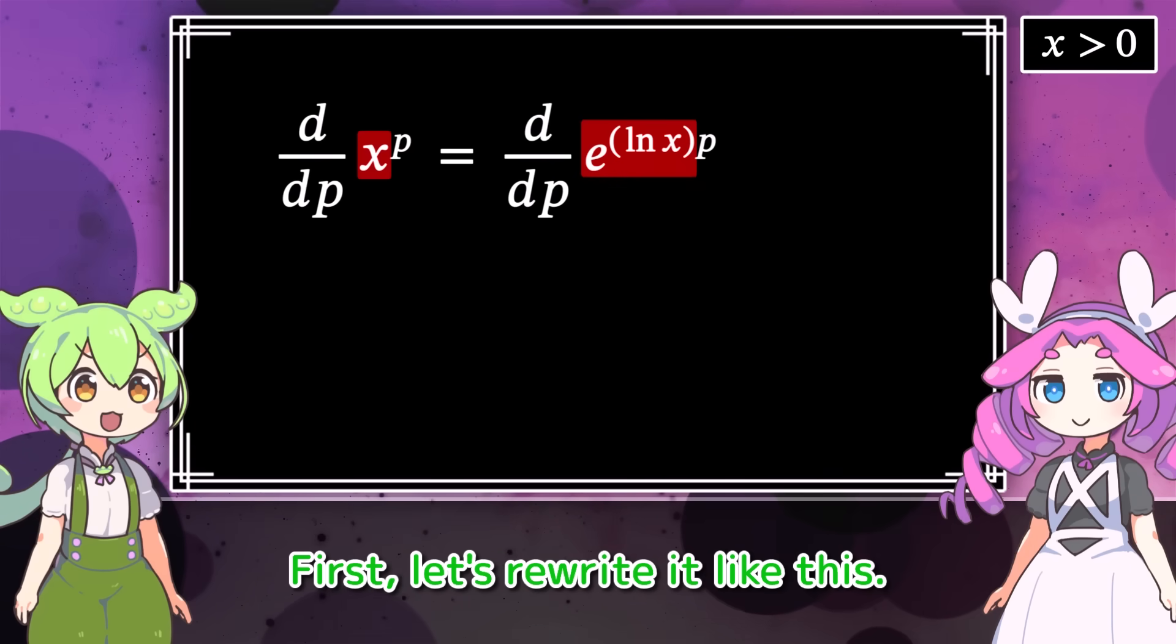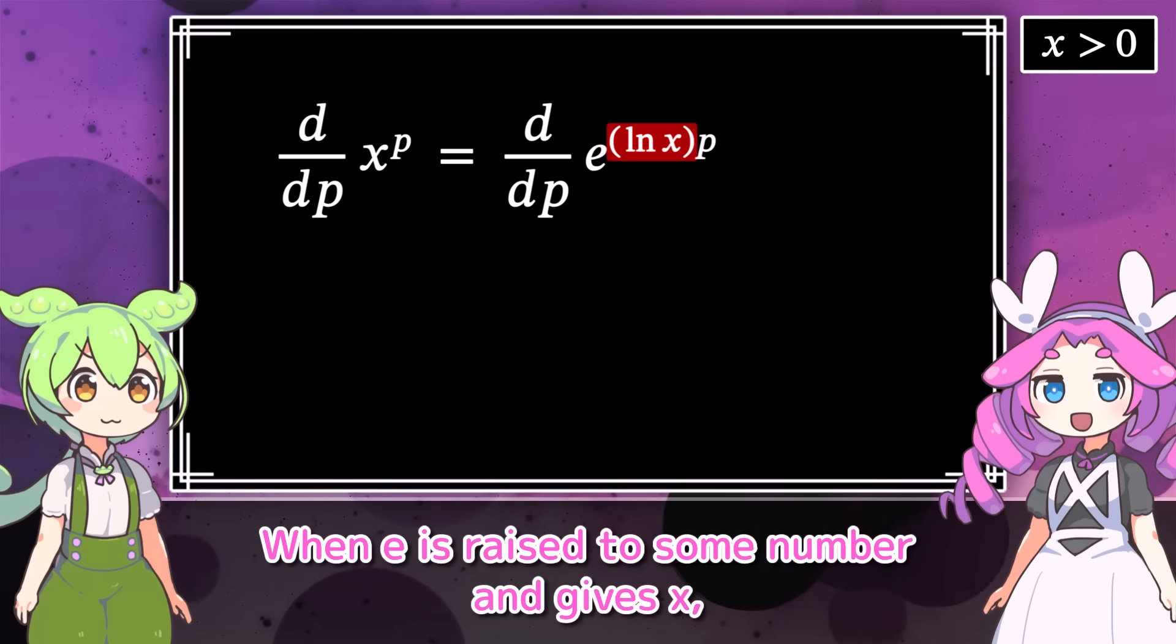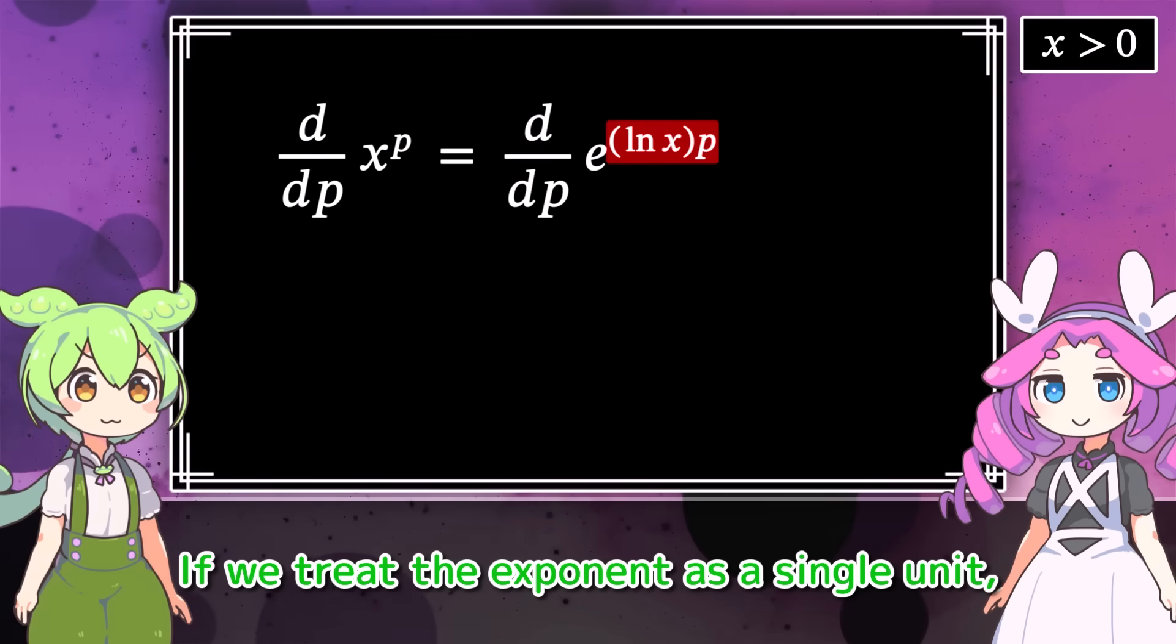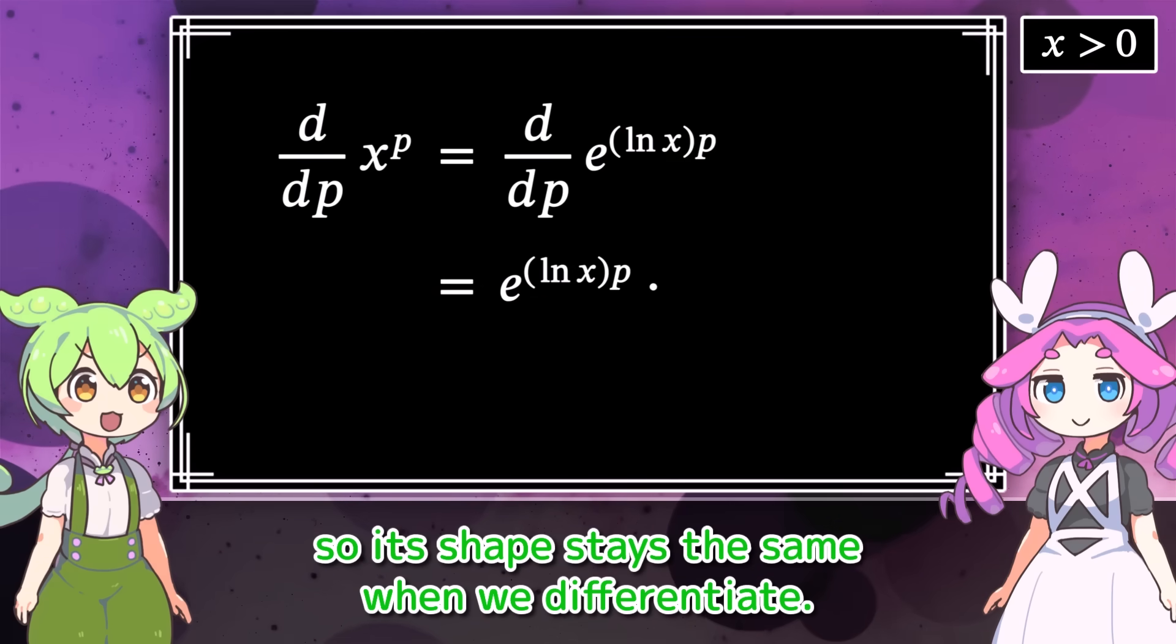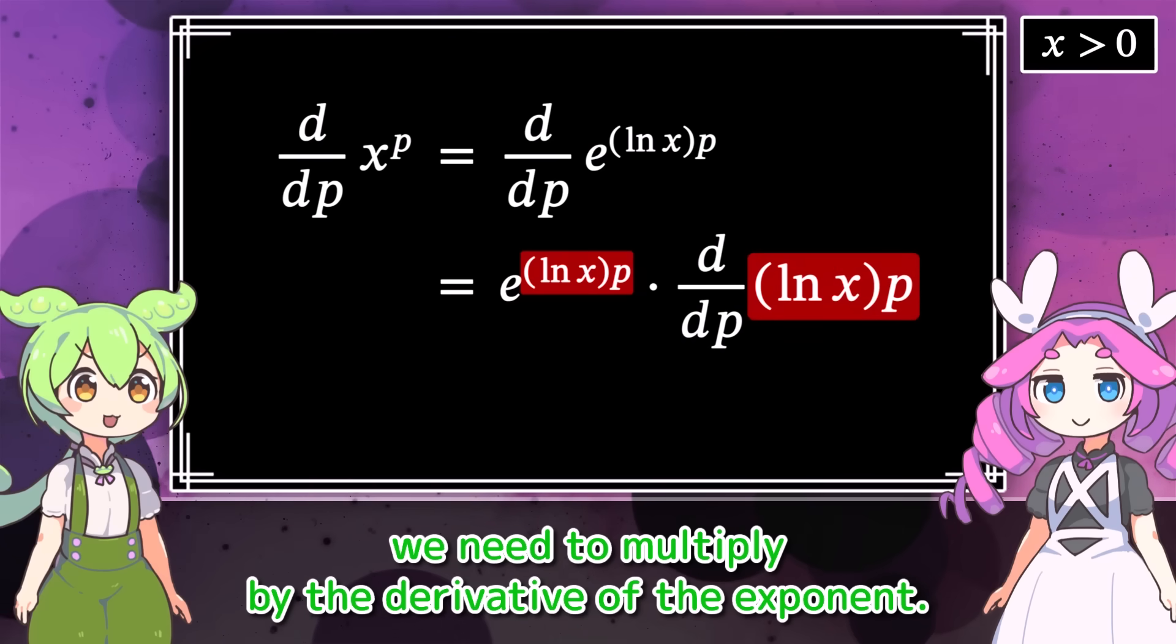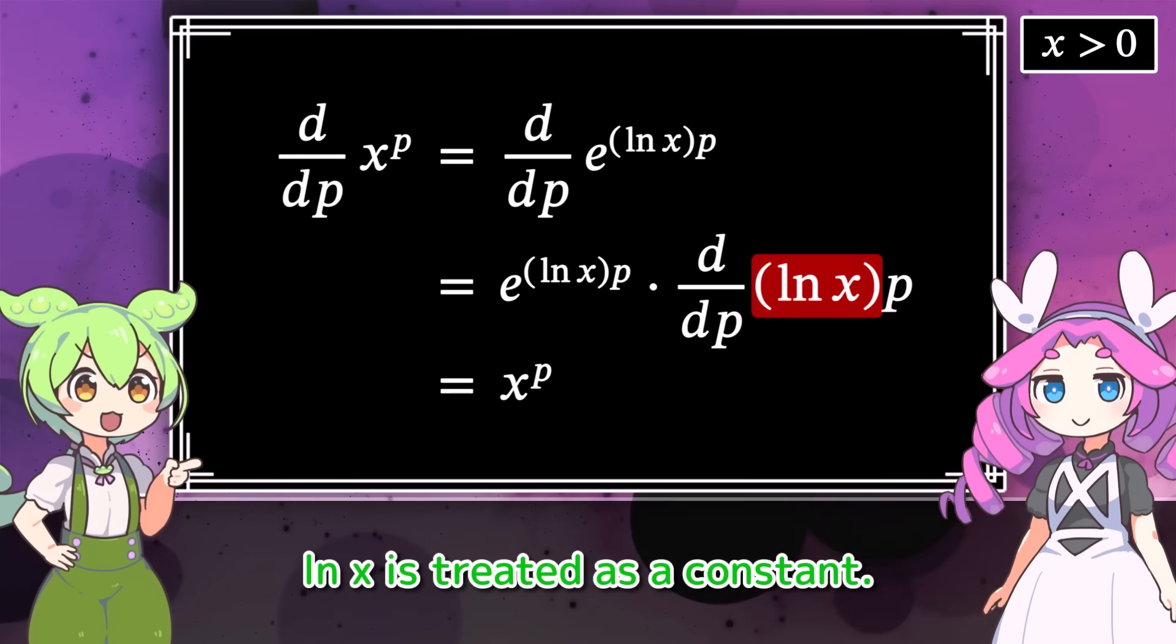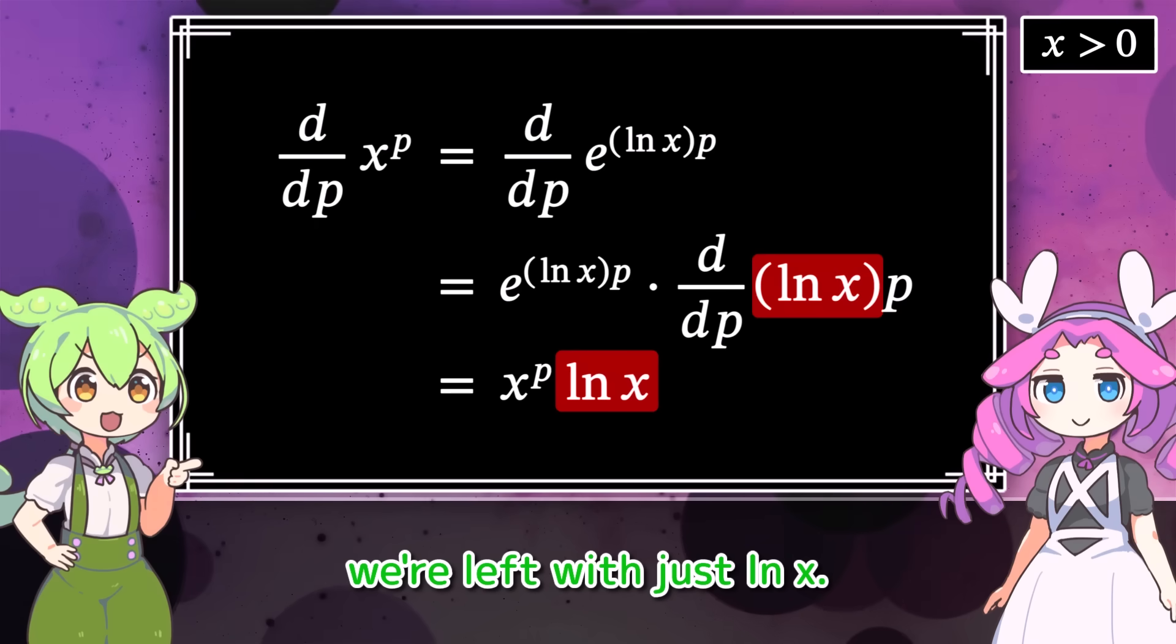First, let's rewrite it like this. x is equal to e to the natural log of x. When e is raised to some number and gives x, that number is the natural log of x. So yes, we can rewrite it that way. Yes! Now let's differentiate it with respect to p. If we treat the exponent as a single unit, this is just an exponential function with base e. So its shape stays the same when we differentiate. But since it's a composite function, we need to multiply by the derivative of the exponent. Alright, let's switch back to x here. When differentiating this with respect to p, the natural log of x is treated as a constant. Since the derivative of p with respect to p is 1, we're left with just the natural log of x. Nice!